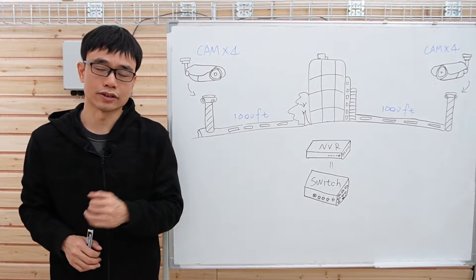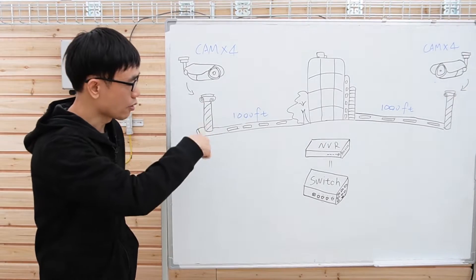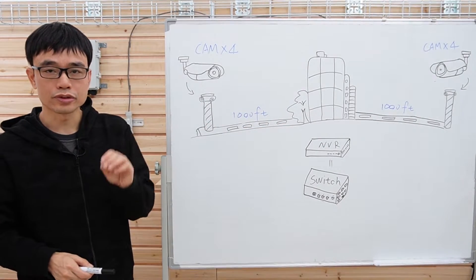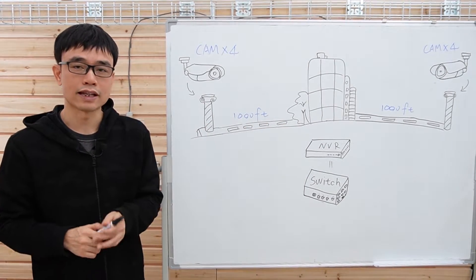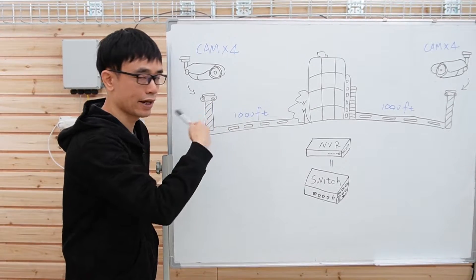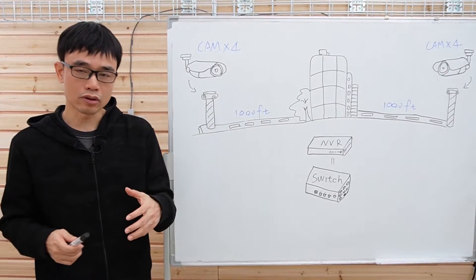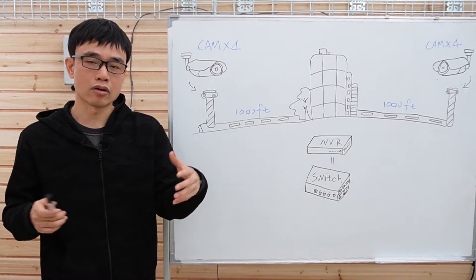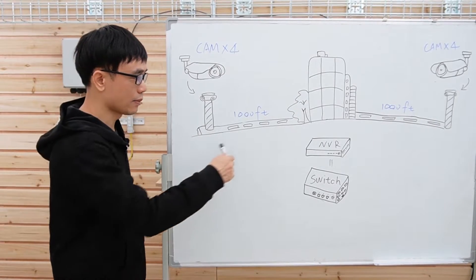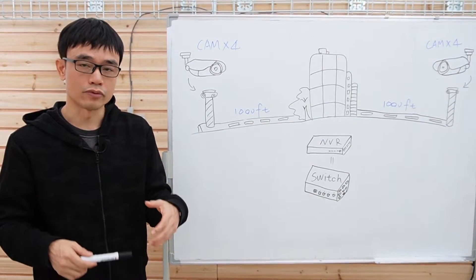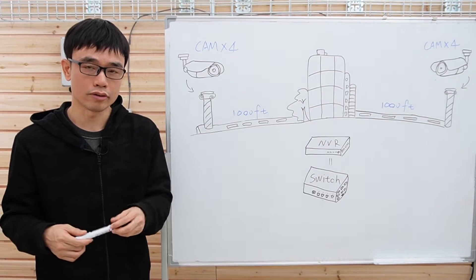The second challenge is the power. The power source is not available at both ends, so you need to use PoE, power over Ethernet, to send the power from the NVR to these cameras. As we know, the longer the distance, the more power loss will be. Now we are getting about three times longer than the regular PoE, so we are facing more serious power loss.